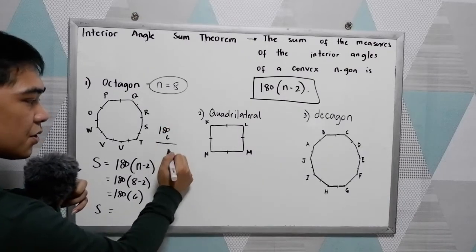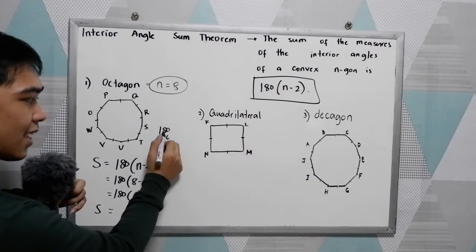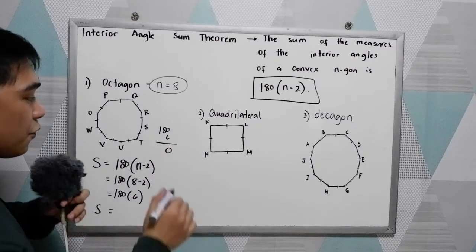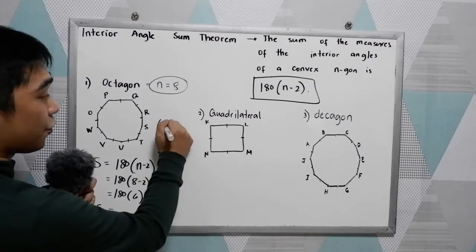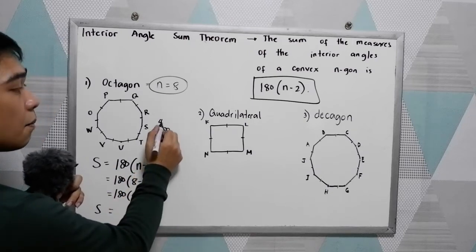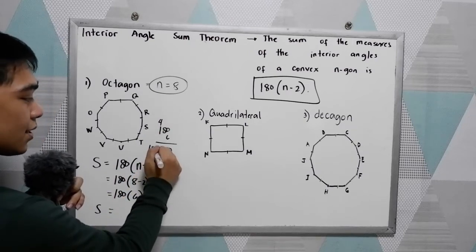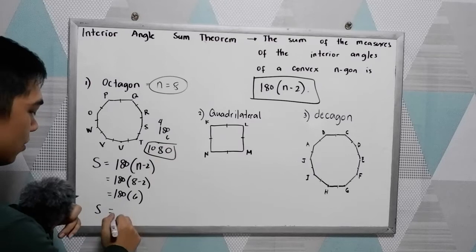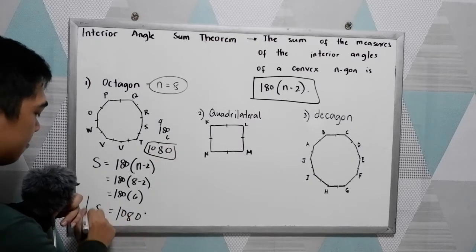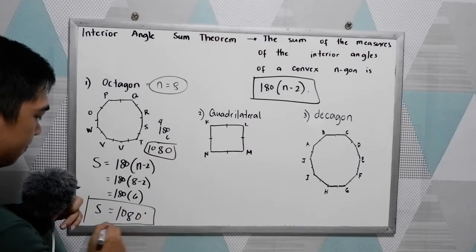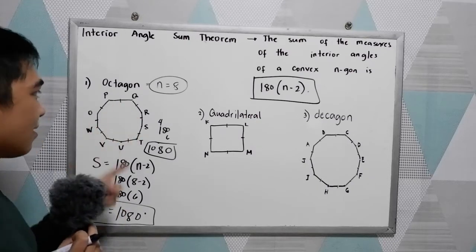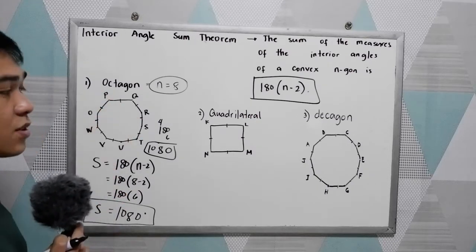To compute: 6 times 0 is 0, 6 times 8 is 48, carry 4, then 6 times 1 is 6 plus 4 is 10. So the sum total is 1080 degrees. The sum of all the angles in an octagon is 1080.